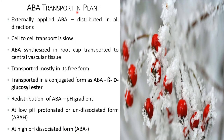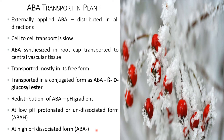Transport of abscisic acid in plants: externally applied abscisic acid is distributed in all directions. Cell-to-cell transport is slow. Abscisic acid synthesized in the root cap is transported to the central vascular tissue, mostly in its free form. Its conjugated form is abscisic acid beta-D-glucosyl ester. Redistribution of abscisic acid mainly depends on pH gradient. At low pH, the protonated (undissociated) form ABAH is present; at high pH, the dissociated form ABA⁻ predominates.